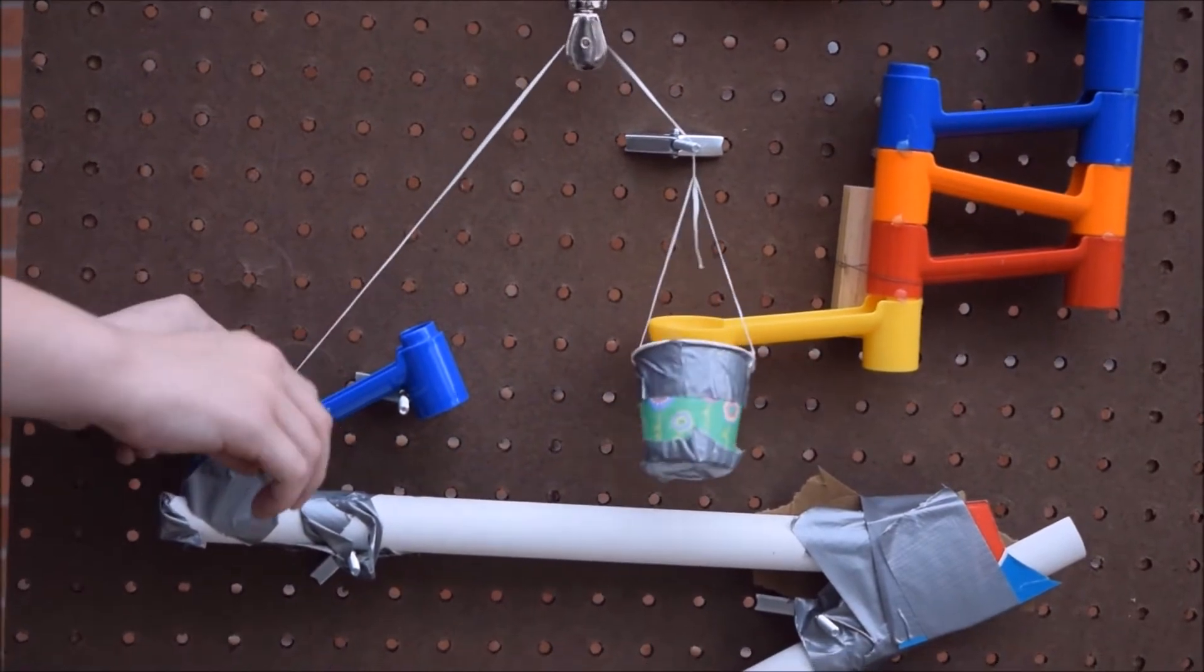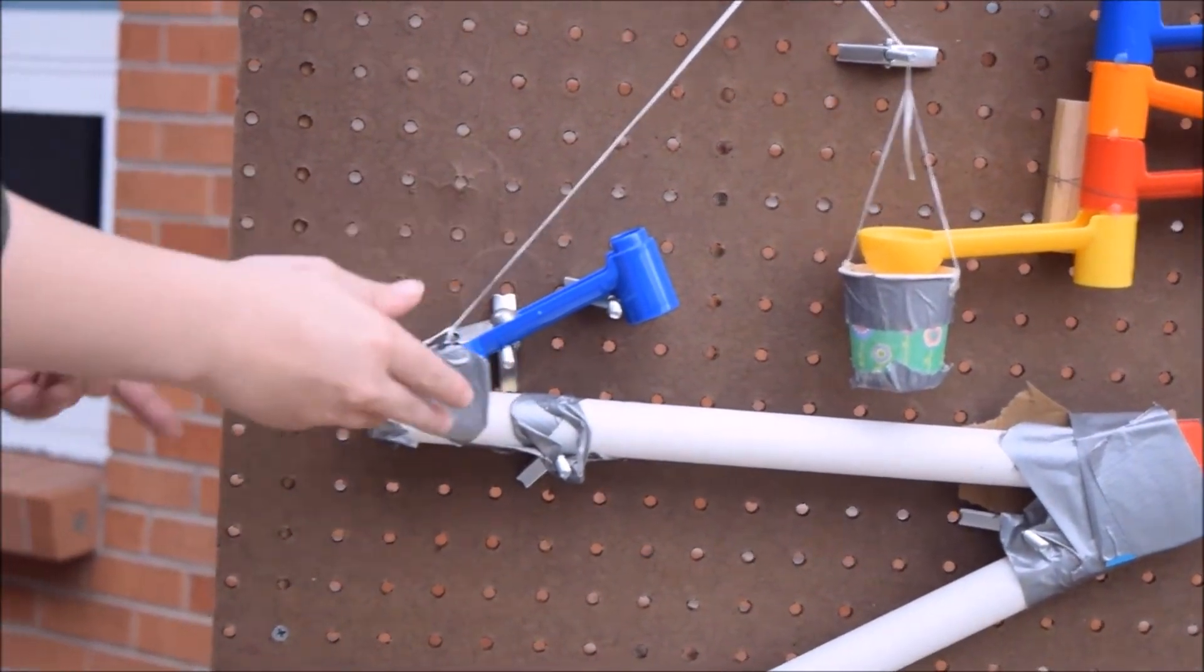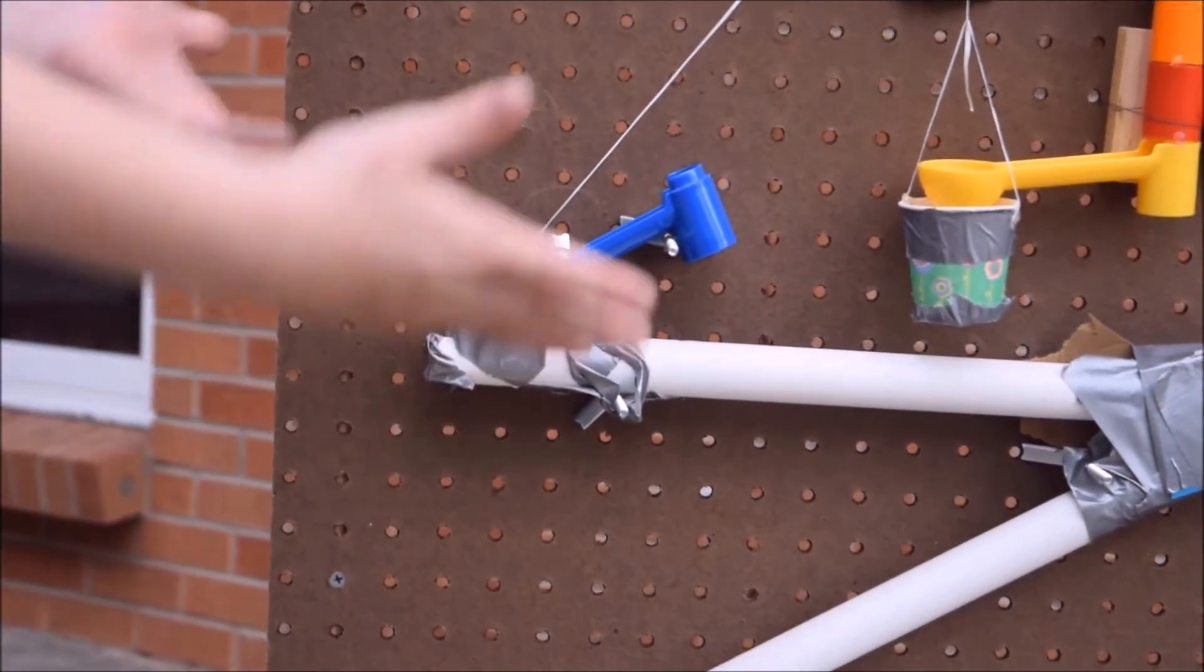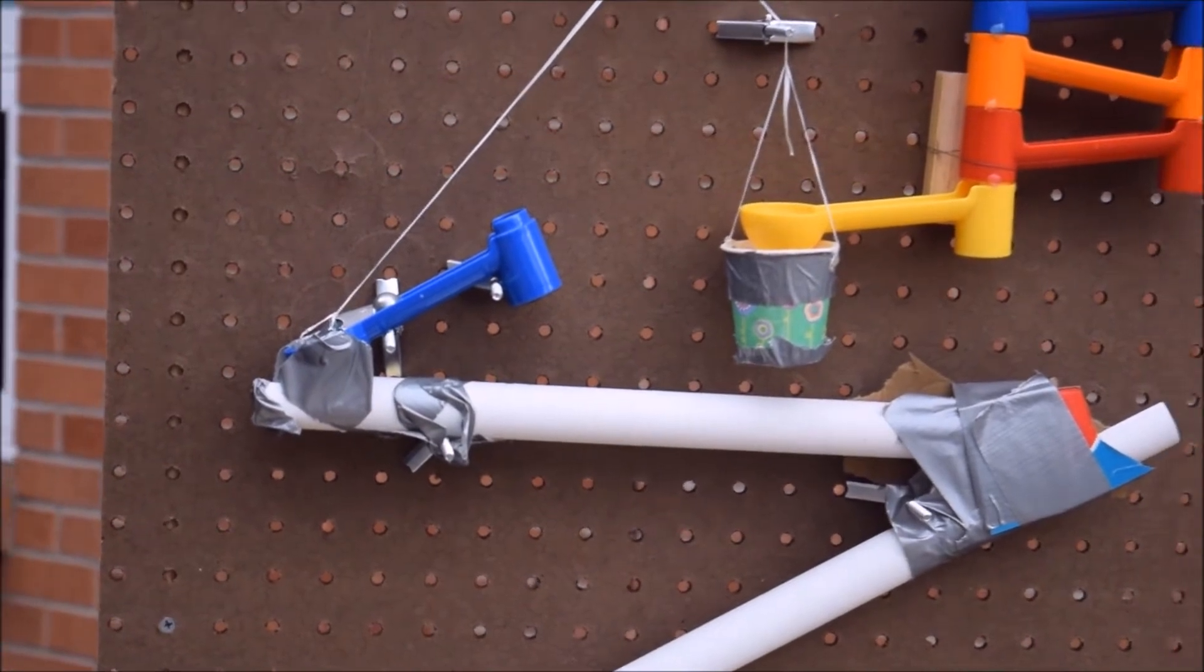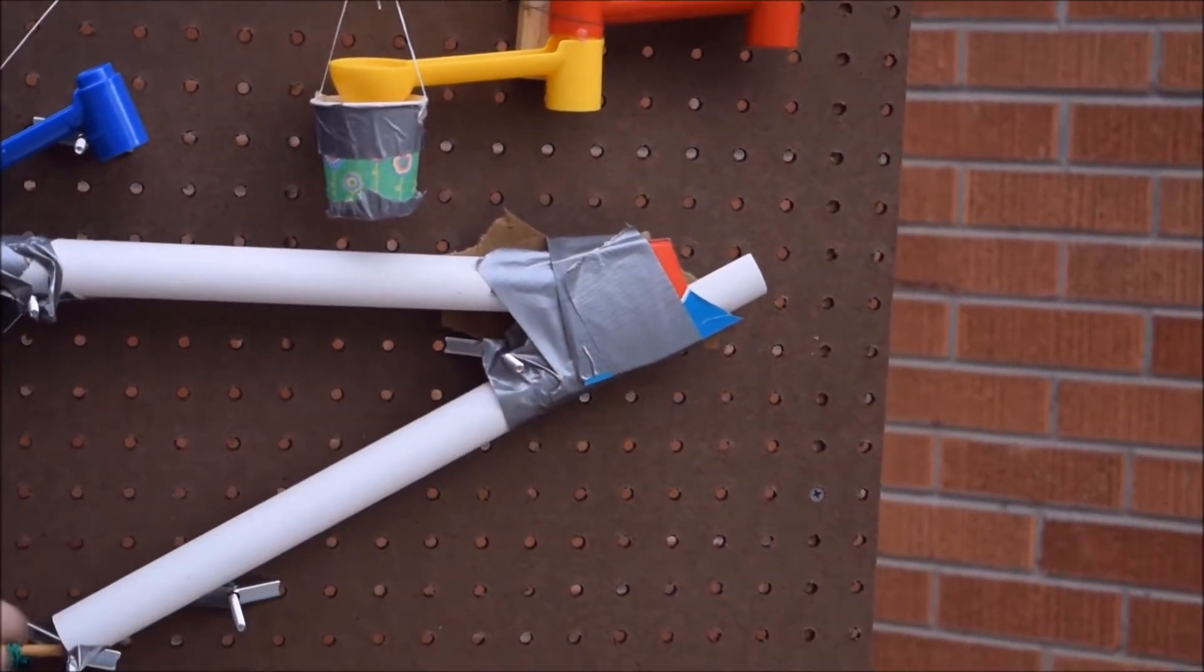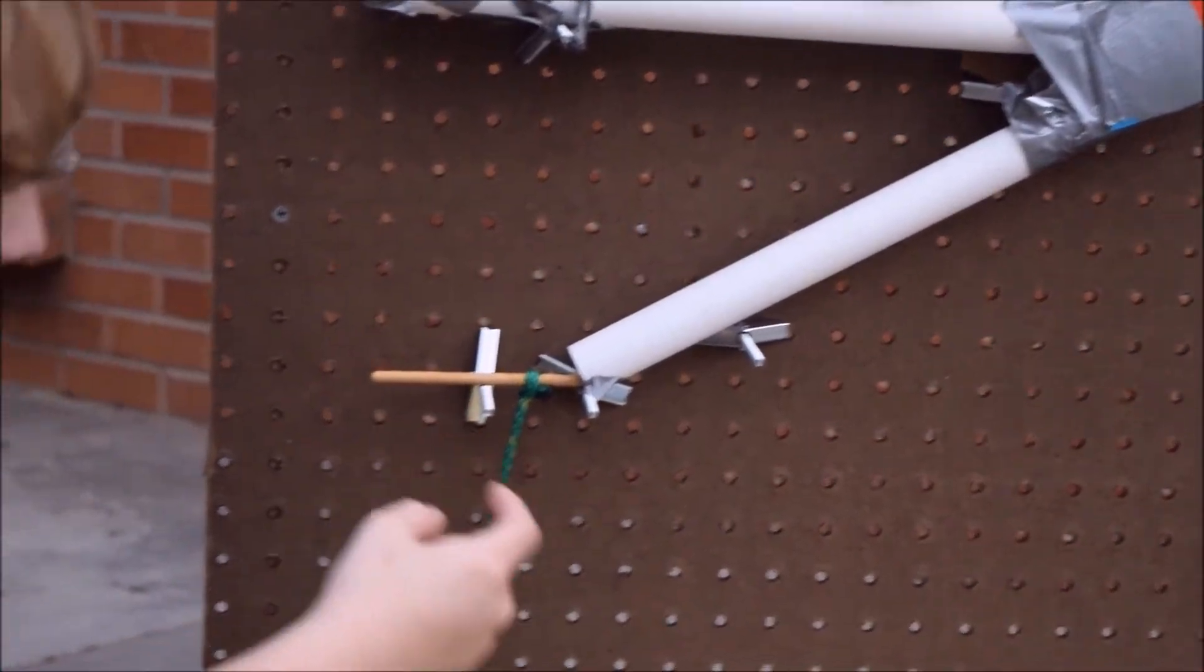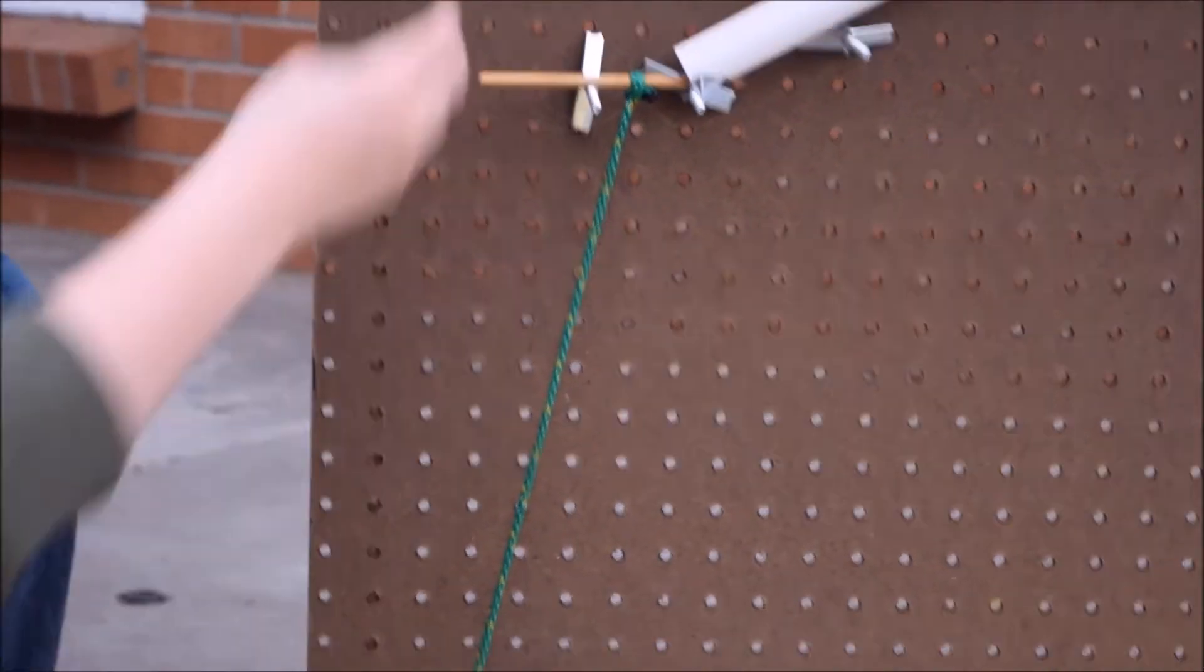When that barrier is pulled up it will let the marble continue rolling down. They'll go into the PVC inclined plane, then once it comes down here there's a dowel that's tied off and all the tension on the spring makes it really easy for the marble to knock off the dowel.